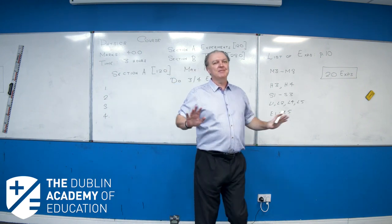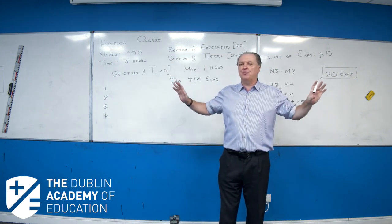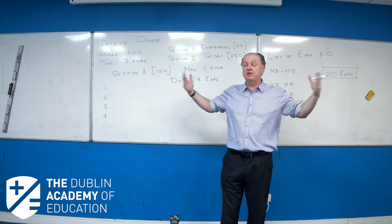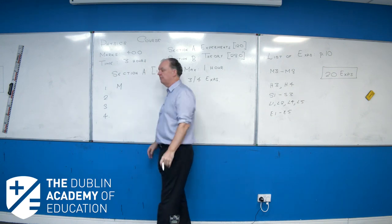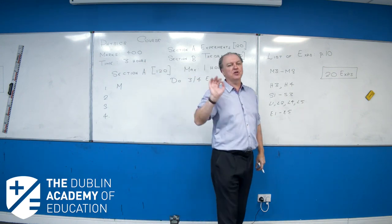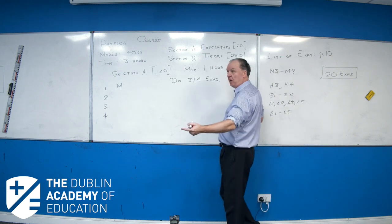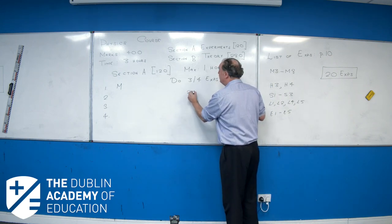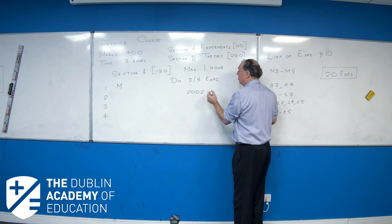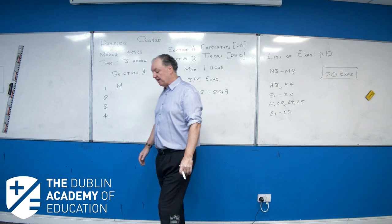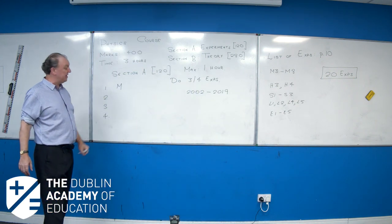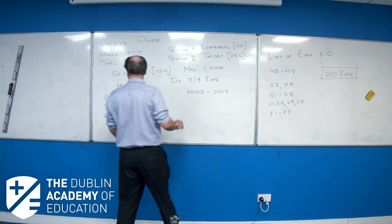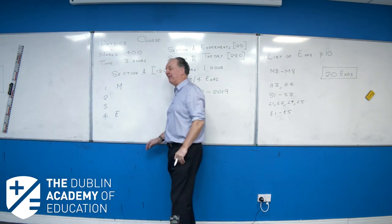Question one appears to be, I'm not saying this is written in stone because it may change, but I'm pretty certain of it. Question one is always a mechanics experiment, has been since this course started. Now, this course started quite a long time ago. It started in 2002. So, we're going from 2002 to 2019. So you've got about 20 years of questions. Question one is always mechanics, and question four is always on electricity.